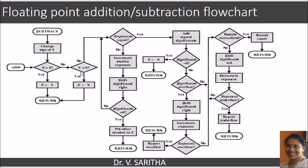If both numbers are not zero, we verify whether the exponents are equal. If they are not equal, we increment the smaller exponent and shift the significand — that is, the mantissa part — to the right. We then check whether the significand has become zero, since shifting right can sometimes produce a zero significand. If it is not zero, we check again whether the exponents are equal, continuing this loop until they are equal.